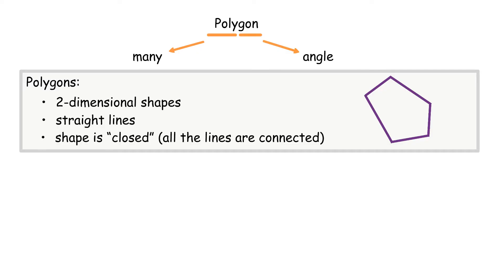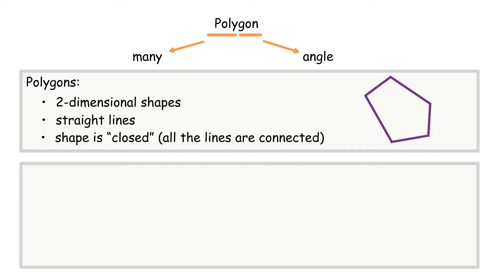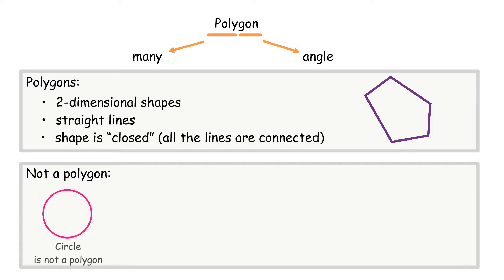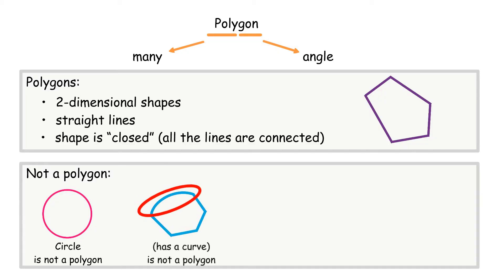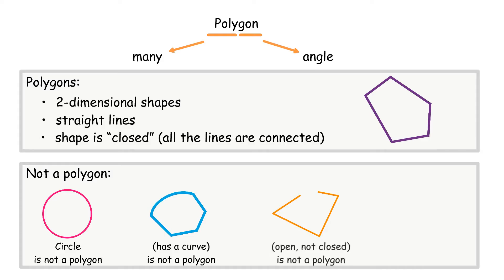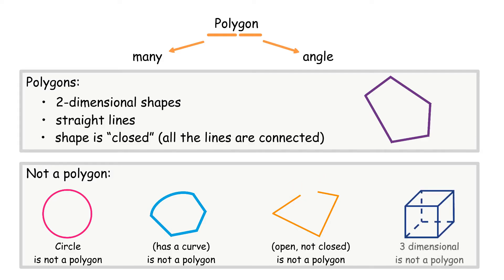There are some characteristics of shapes that are not a polygon. A circle is not a polygon. A shape with a curve is not a polygon. An open, not closed shape is not a polygon. And a three-dimensional shape is not a polygon.